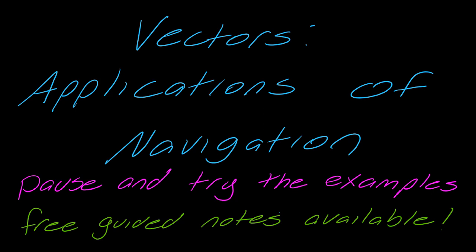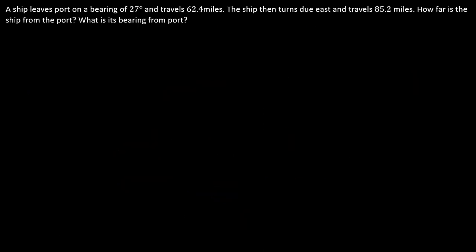We're going to talk about vectors and applications of navigation. So we're going back to bearing, which we've talked about a couple of times. A ship leaves port on a bearing of 27 degrees and travels 62.4 miles, and then the ship turns due east and travels 85.2 miles. So how far is the ship from the port, and what is its bearing from the port?